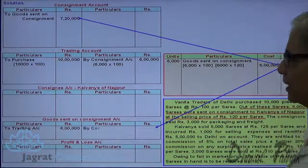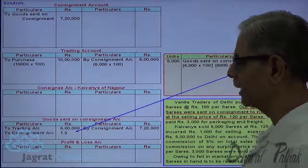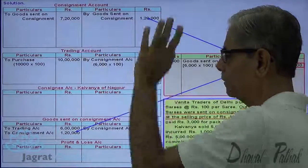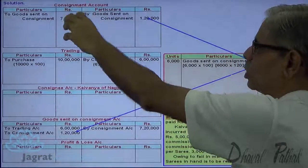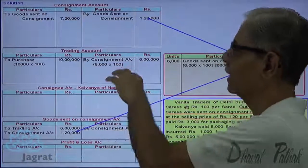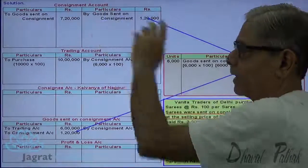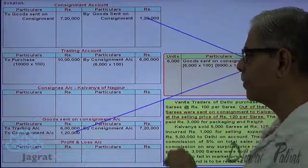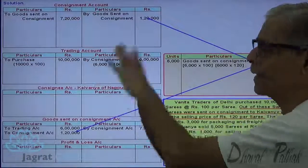The profit load of ₹1,20,000 therein is adjusted by: goods sent on consignment account debit to consignment account credit — this is the adjustment entry. So ₹7,20,000 minus ₹1,20,000 equals ₹6,00,000. The cost of goods sent gets recorded in the goods sent on consignment account, trading account, and consignment account. Goods sent are recorded at invoice price, and the profit load is adjusted by debiting ₹1,20,000. When goods are sent at invoice price, the trading account is credited at cost.